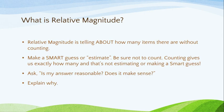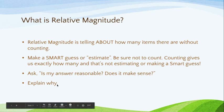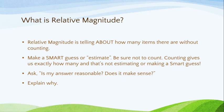Let's review. What is relative magnitude? Relative magnitude is telling about how many items there are without actually counting. You make a smart guess or estimate, and you be sure not to count — counting gives us exactly how many, and that's really not estimating or making a smart guess. It's also important to ask yourself: is it reasonable? Does it make sense? And you can always explain why — when explaining why, you're really just eliminating some of the other options to support the answer that you chose.